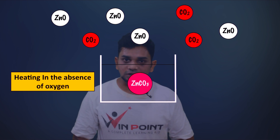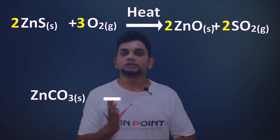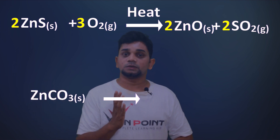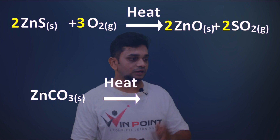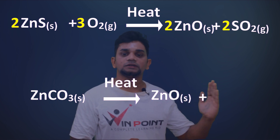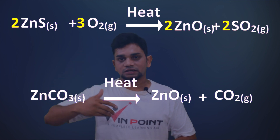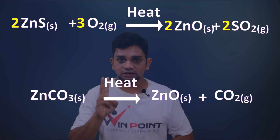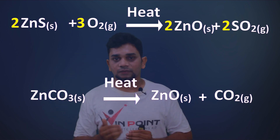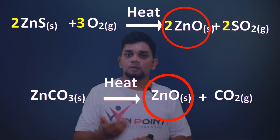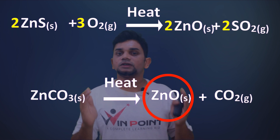The chemical equation is: ZnCO₃ → ZnO + CO₂. In both reactions the common product is zinc oxide. Whether the ore is zinc sulfide (roasting) or zinc carbonate (calcination), the common product is zinc oxide.